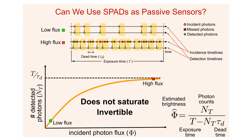Unlike a conventional sensor, a SPAD pixel does not suffer from a full well capacity limit. Instead it has a non-ideality called the dead time. Every time it detects a photon it goes dead or blind for about 100 nanoseconds. Once the previous dead time interval ends, the pixel is ready to capture the next photon. At the top of the slide we see the timelines of incident photons and detected photons for a SPAD pixel at two different light levels. At low flux, the photons are spread apart on average so the dead times do not overlap and the pixel captures almost every incident photon. So in low light, the response curve is approximately linear.